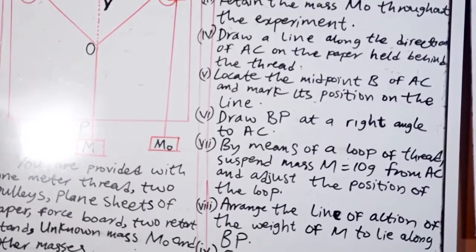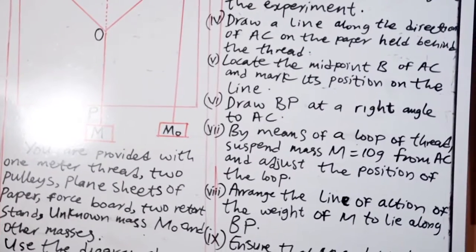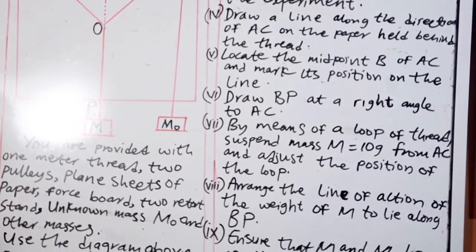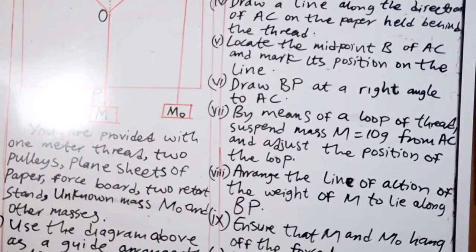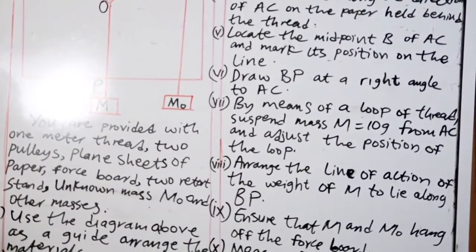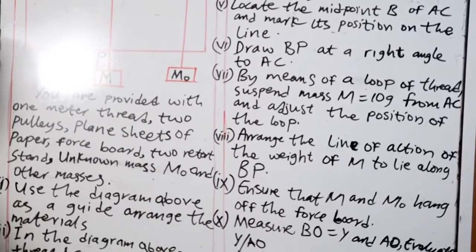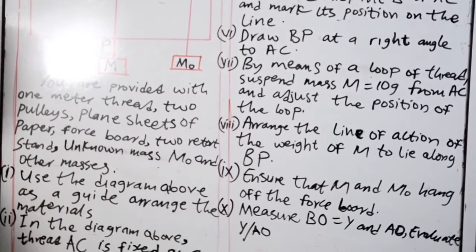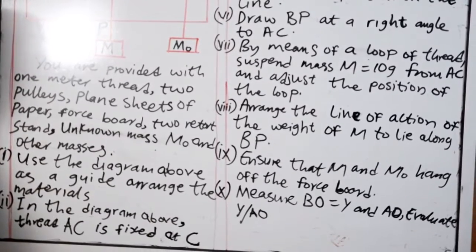Six: Draw BP at a right angle to AC. Seven: By means of a loop of thread, suspend mass M is equal to 10 grams from AC and adjust the position of the loop. Eight: Arrange the line of action of the weight of M to lie along BP. Nine: Ensure that M and MO are off the force board.